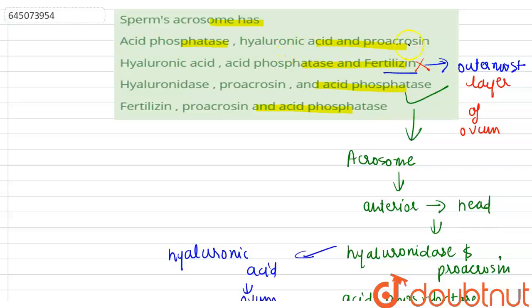Now, acid phosphatase, hyaluronic acid and pro-acrosin is also incorrect because hyaluronic acid is also present in the ovum, which is the female gamete.